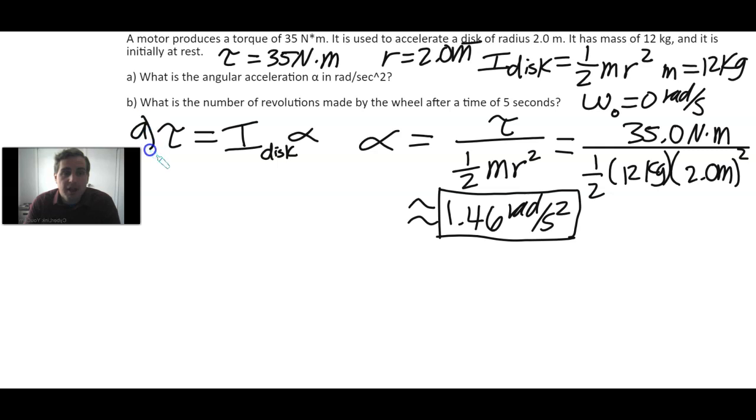That takes care of part A. Now part B asks what is the number of revolutions made by the wheel in a time of 5 seconds. We have this angular acceleration and the initial angular velocity. We want the number of revolutions, so we want Δθ. We also know the time that elapses is 5 seconds.